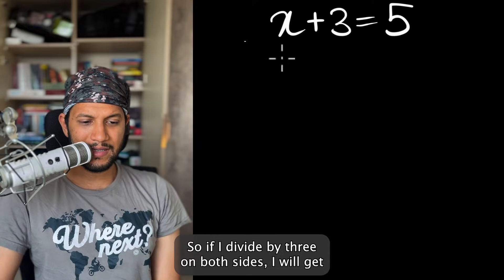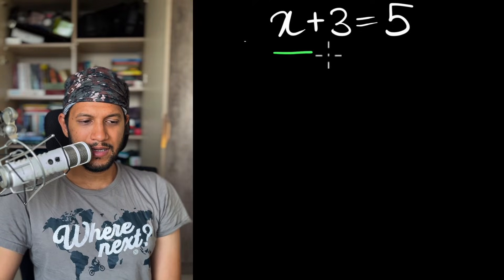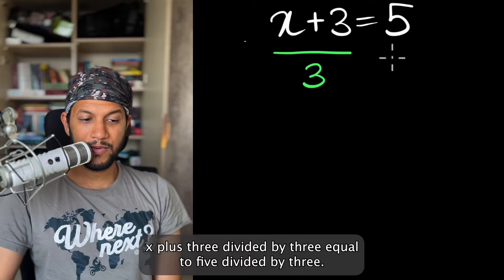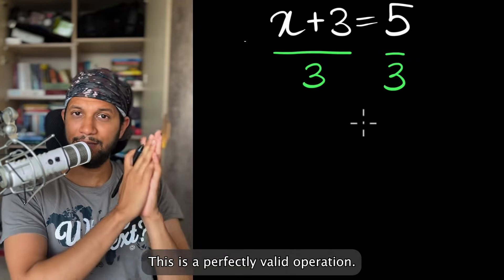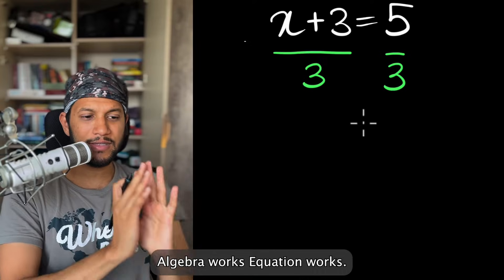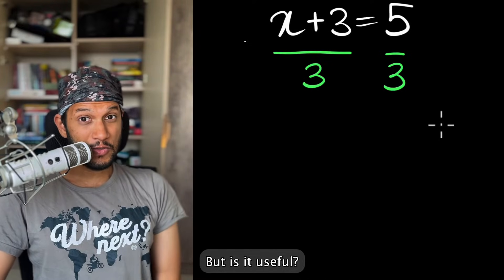So if I divide by three on both sides, I will get X plus three divided by three equal to five divided by three. This is a perfectly valid operation. Algebra works. Equation works. But is it useful?